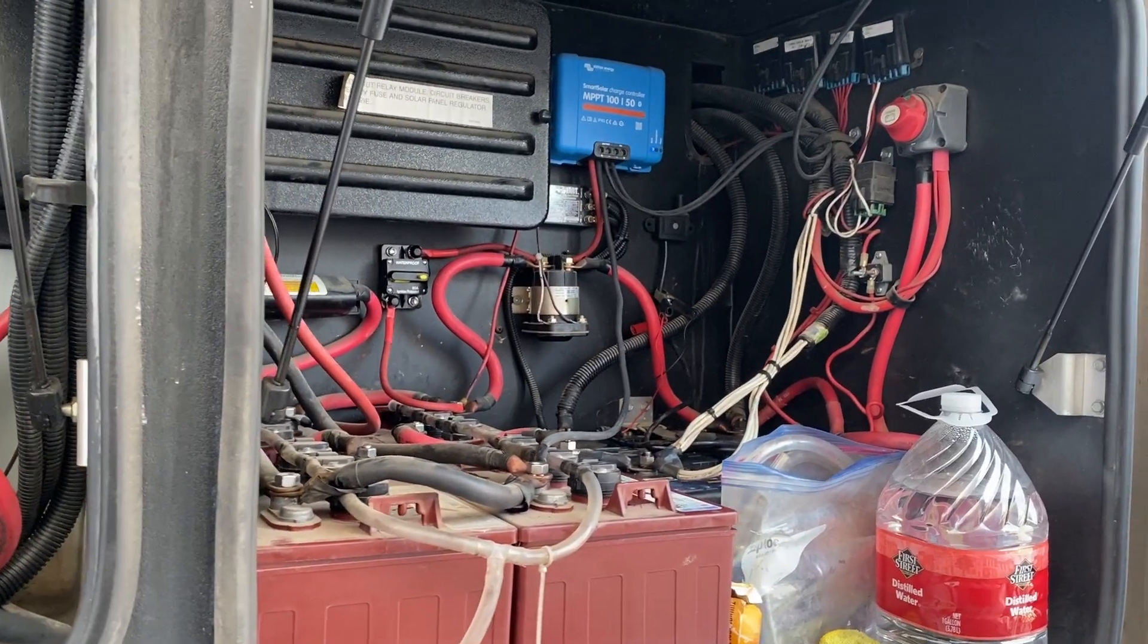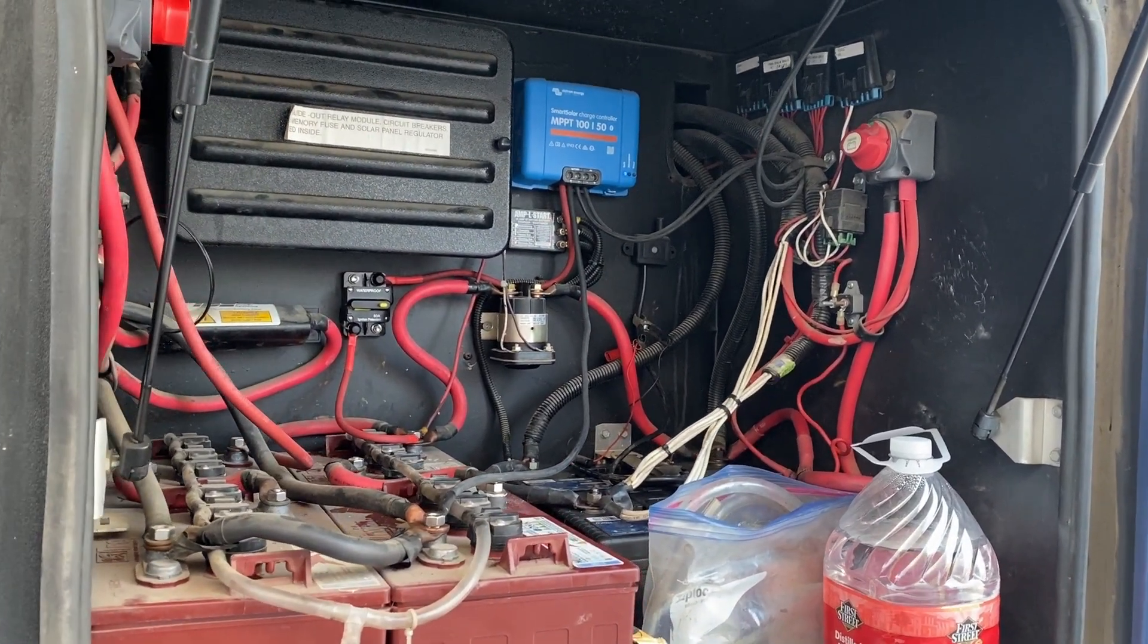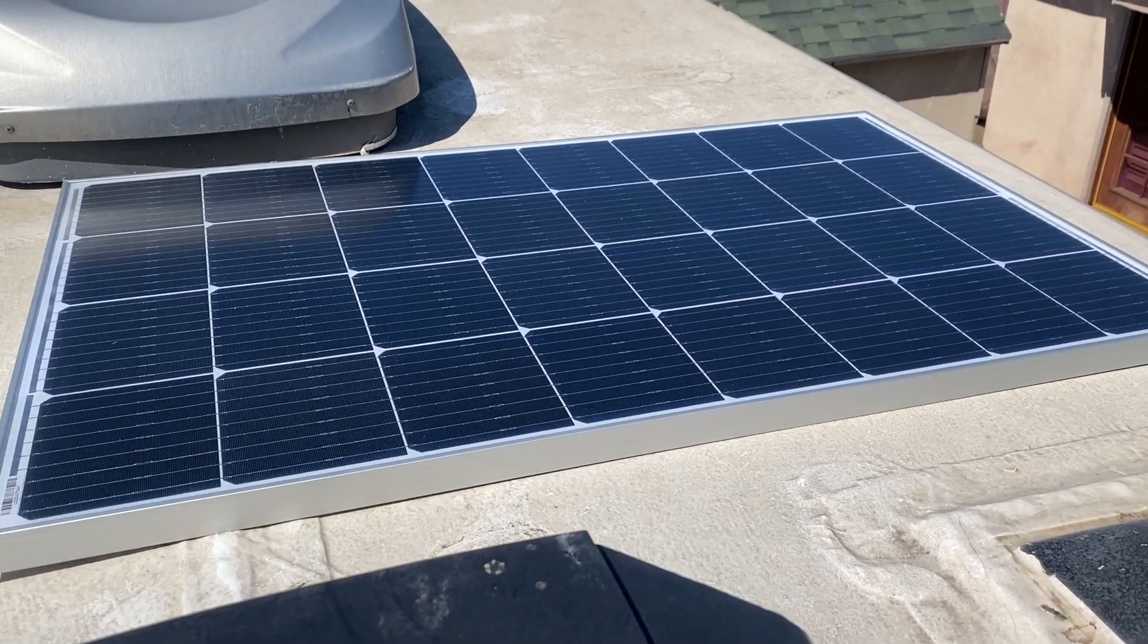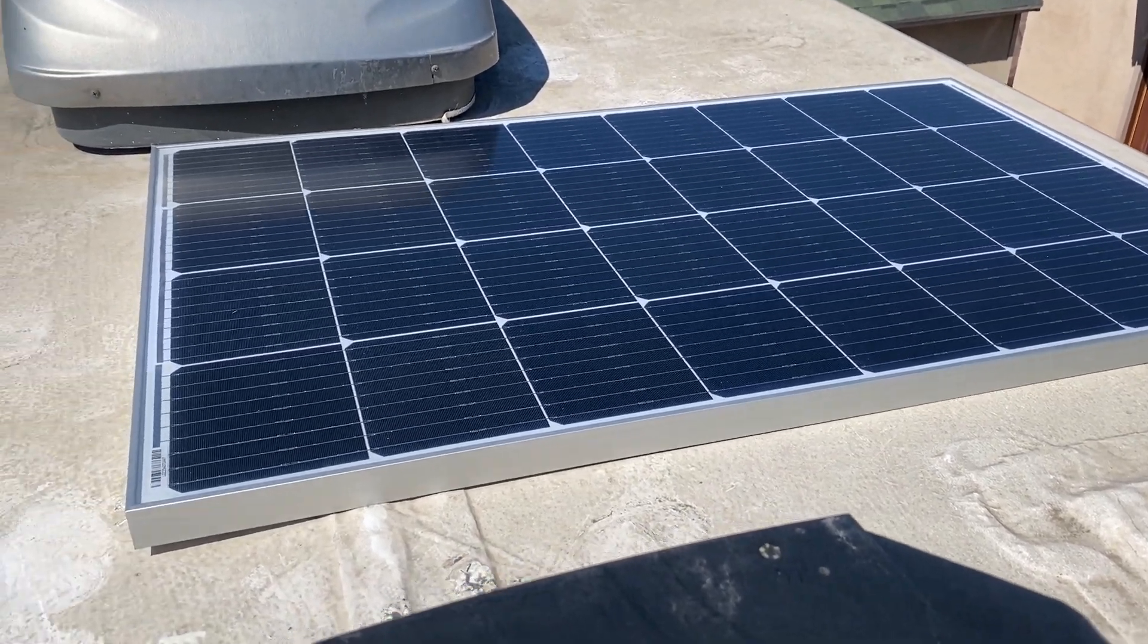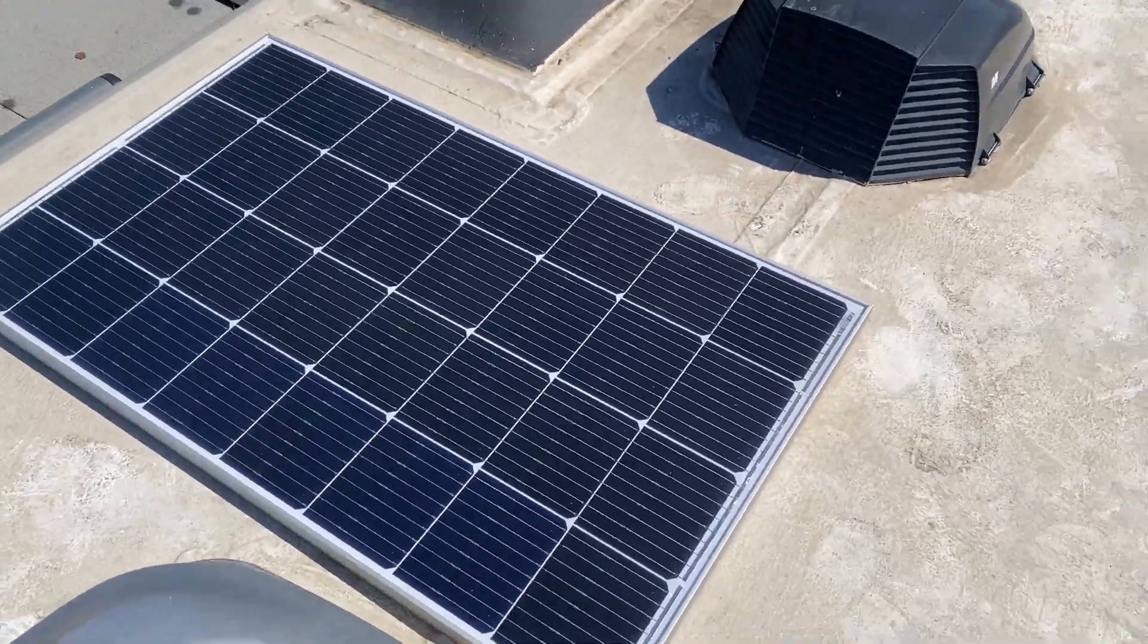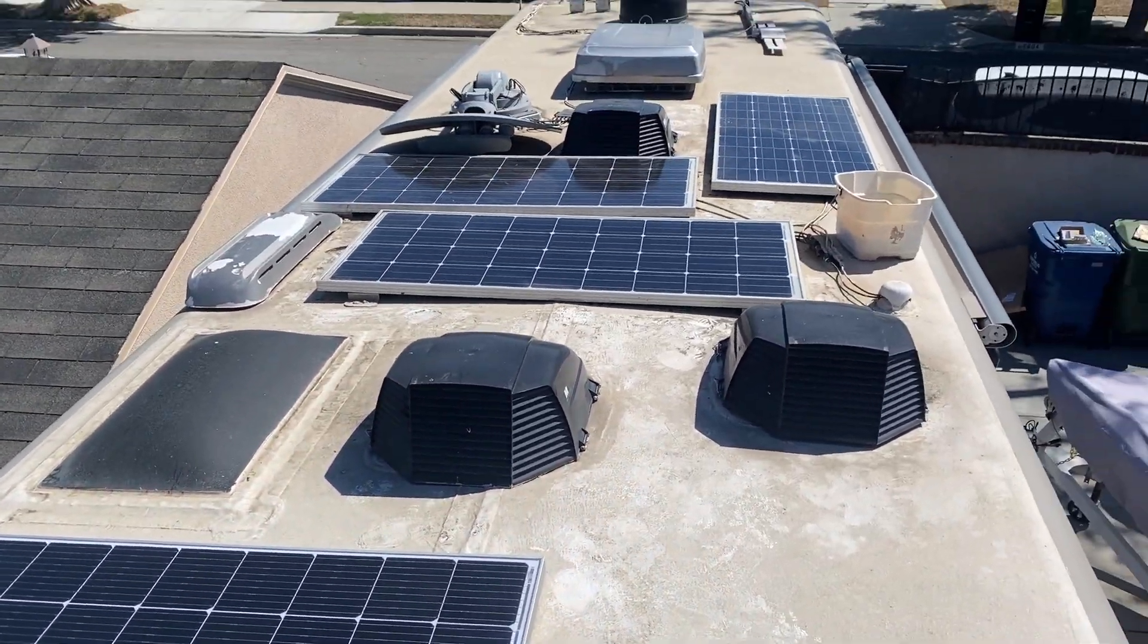The 50 amp also means the charge controller can only charge your batteries at 50 amps of current. So that means that every charge controller has a maximum amount of watts that can be hooked up to it at once. It may seem like we can hook up more panels since we haven't met the threshold for the charge controller. But that's not the case.